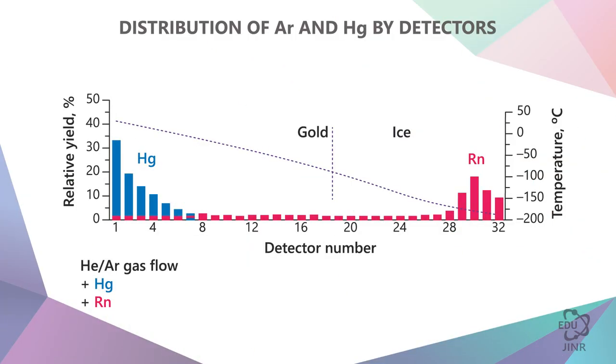This is a diagram of how it happened. The gas used was helium-argon, and it carried mercury and radon. This is the temperature gradient. This is experimental data. Mercury adhered to the walls of the first detectors, whereas radon landed here, in the farthest detectors.